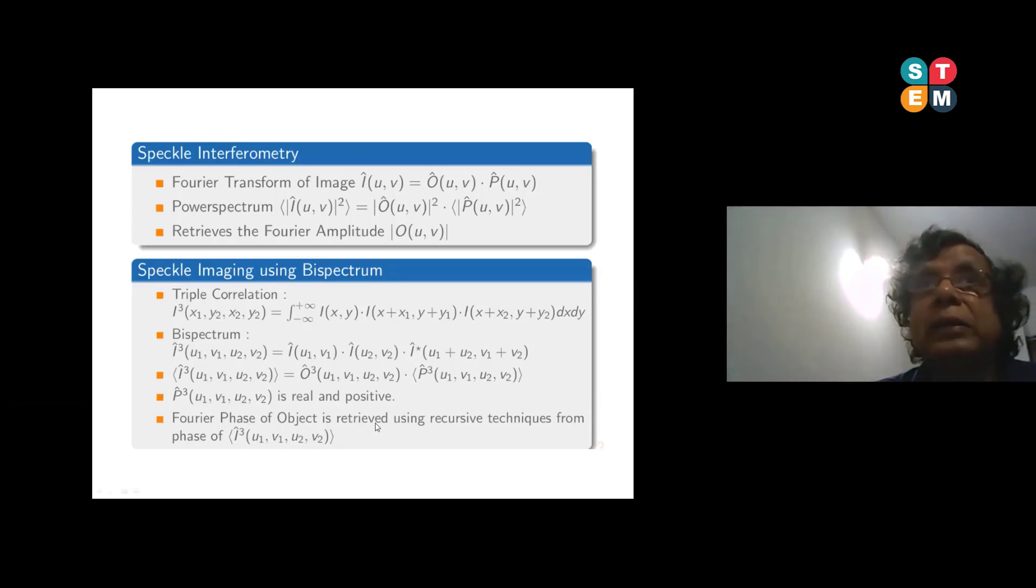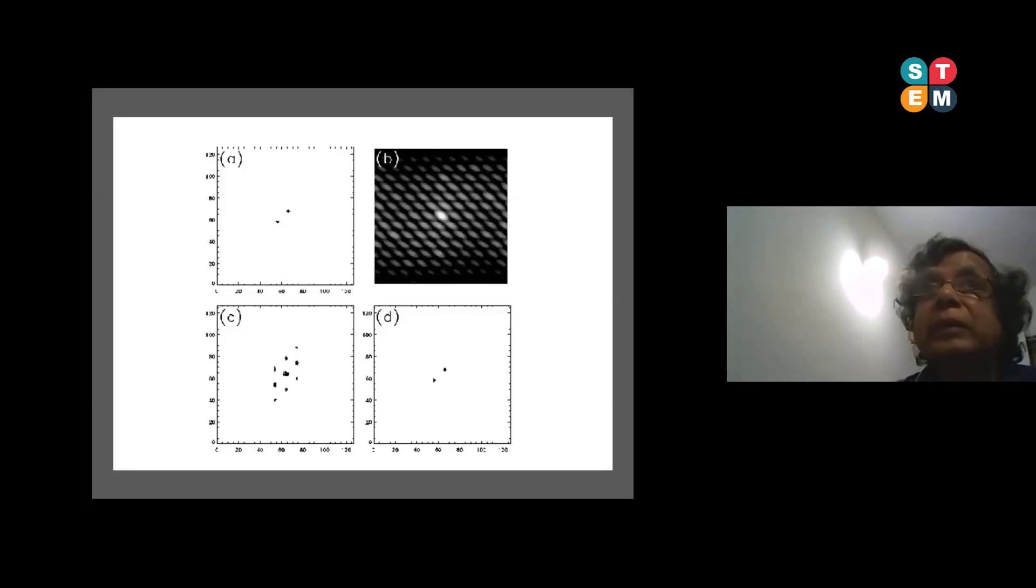We tried in our institute, apart from building the speckle camera, we tried bi-spectrum technique - that's a triple correlation. So you shift the image and then you take the conjugate of it, so it becomes a four dimensional calculation. In those days in the 90s, the computation was so heavy that even a single frame of 128 by 128 used to take hours to analyze.